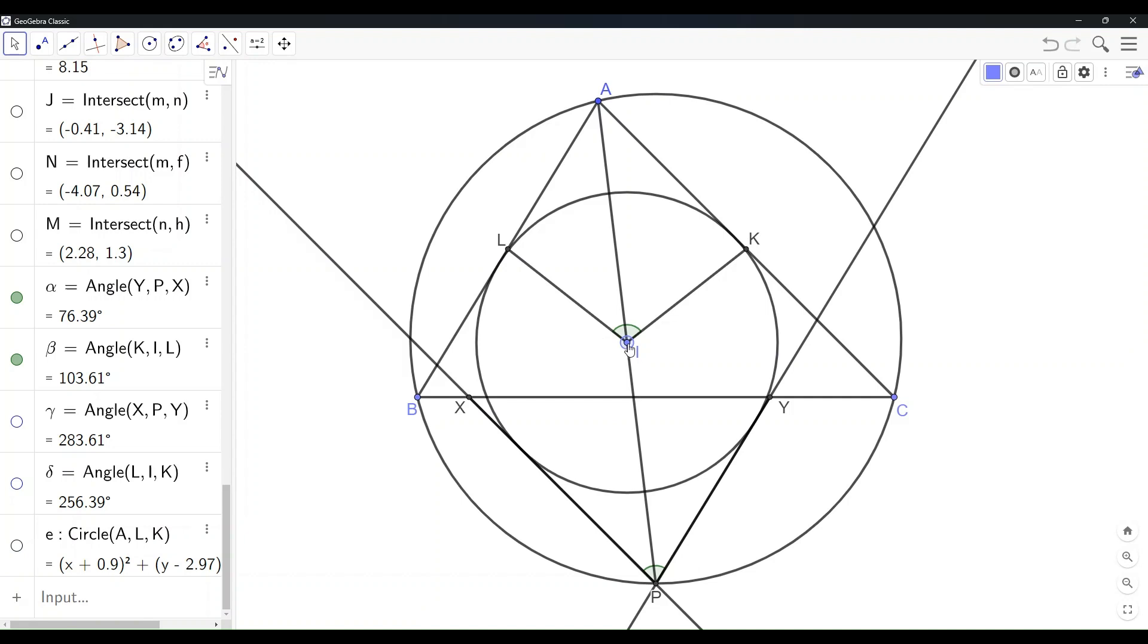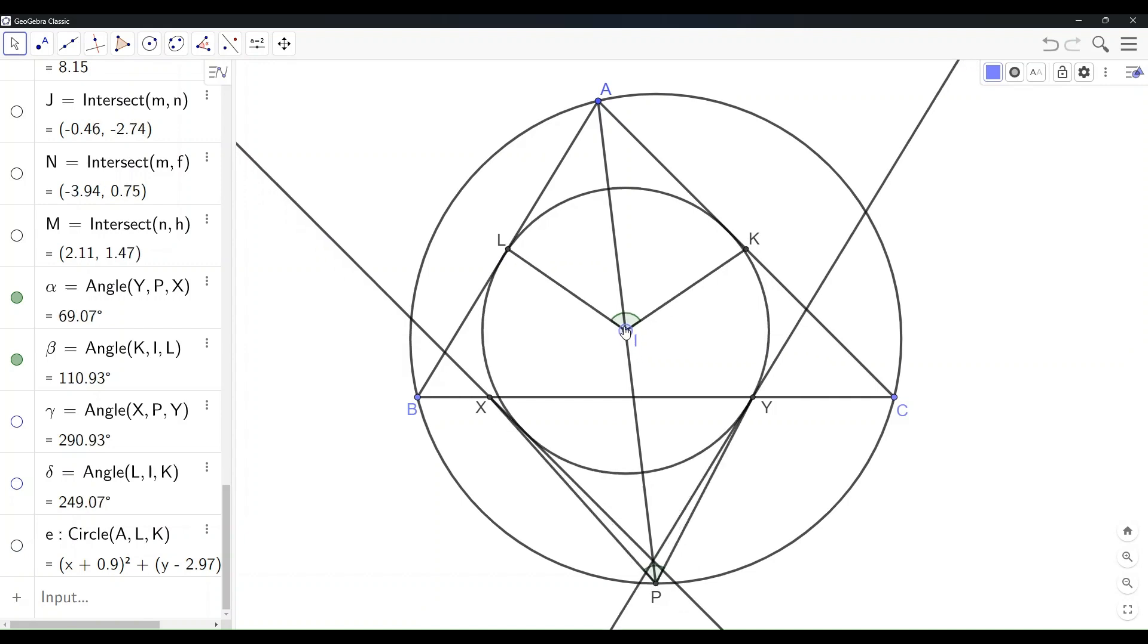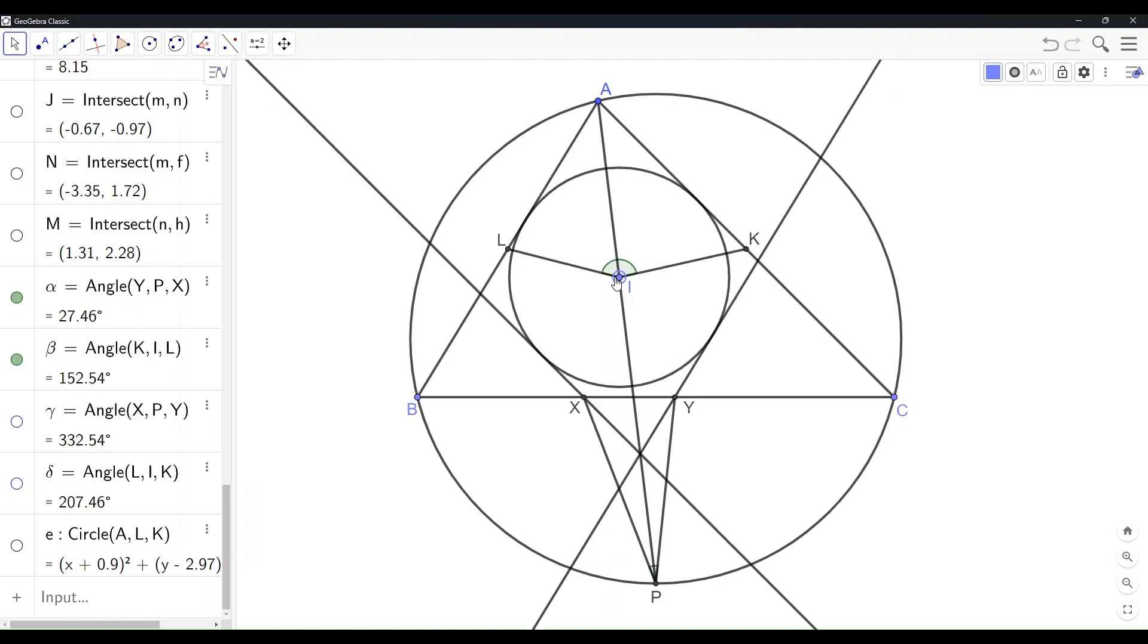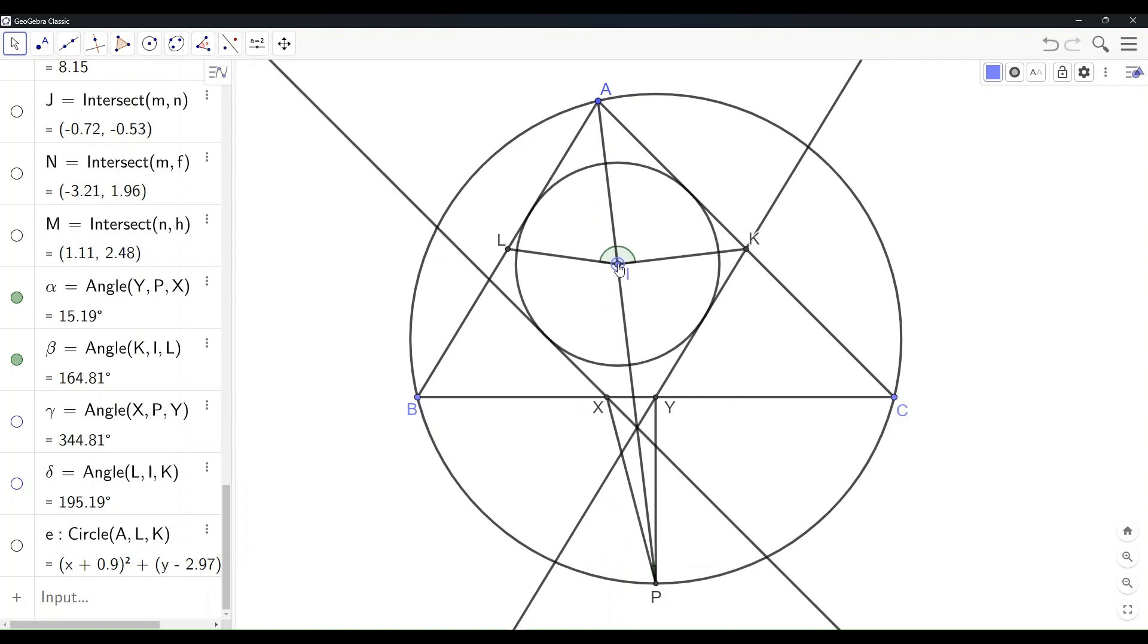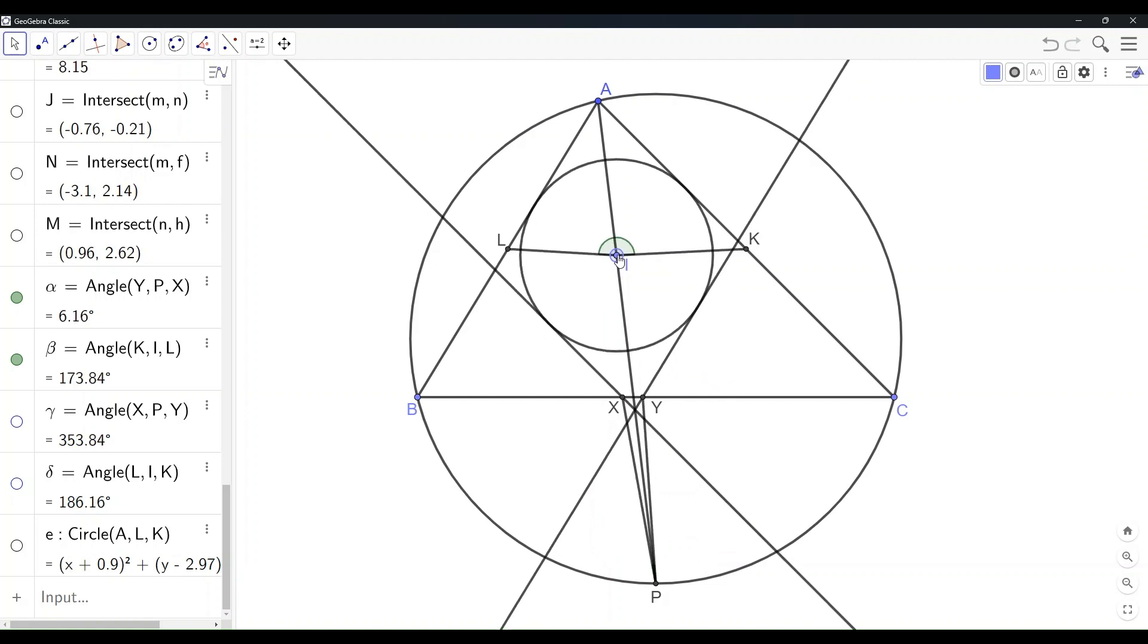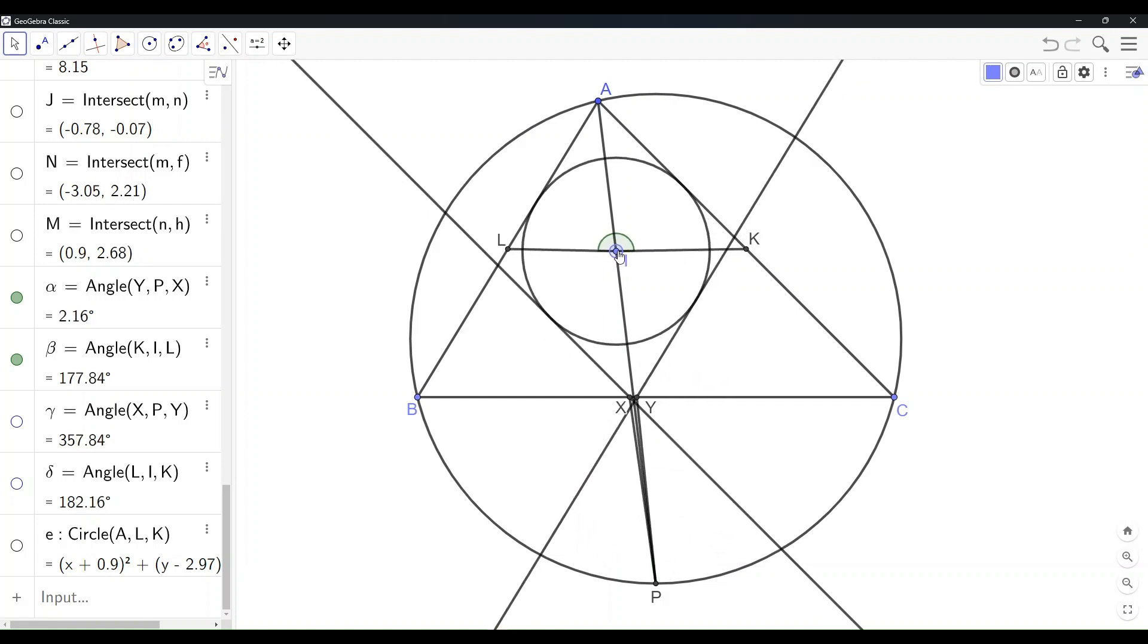We can also move the point I up and the circle is getting smaller. The equality would still hold. Another special case is when I is collinear with L and K. In this case, angle LIK is 180 degrees and the other angle XPY is zero.